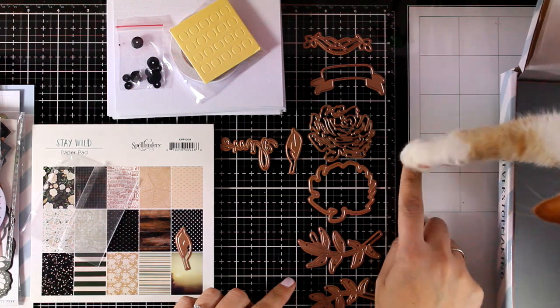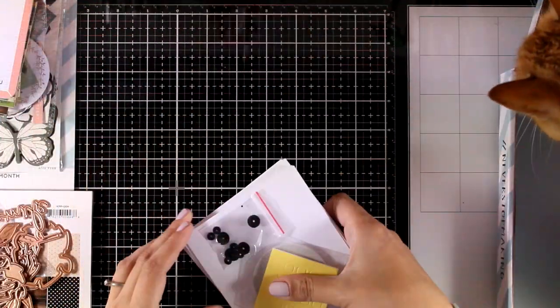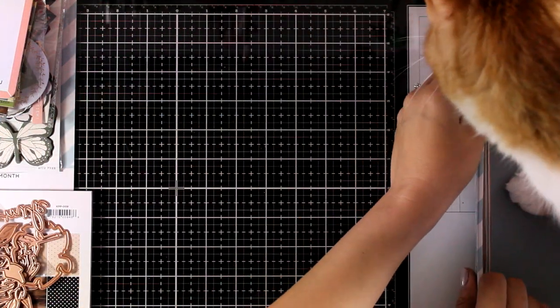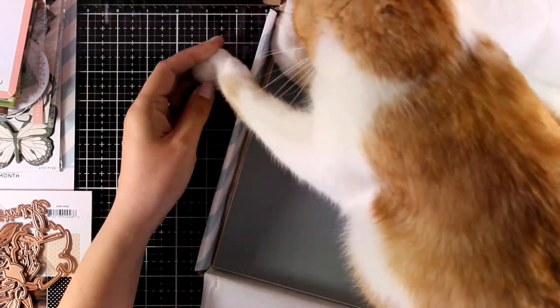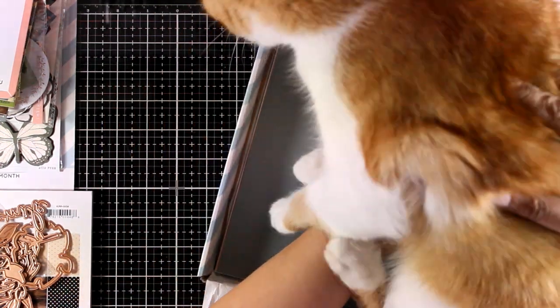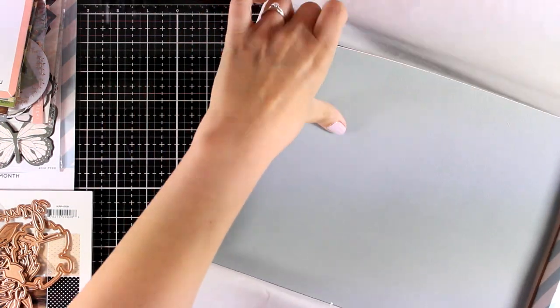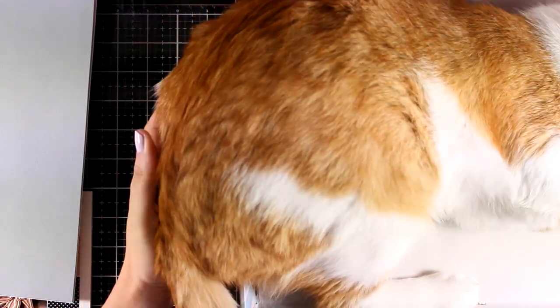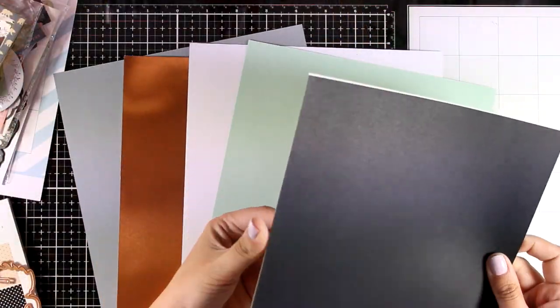And of course if you have a cat, you already know that the moment you open up a box, the cat just has to go inside. So I need to remove the cardstock from the box so that I can show it to you and I'm going to put Ginger back inside. And here are the six different colors that you get in the kit.